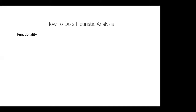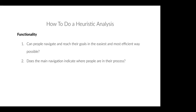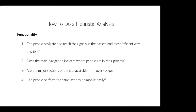When evaluating the functionality of a website, ask yourself: Can people navigate and reach their goals in the easiest and most efficient way possible? Does the main navigation indicate where people are in their customer journey? Are the major sections of the site available from every page — does your navigation include the most important sections? Can people perform the same actions on mobile easily? And do instructions and messages appear in the same place on each page?